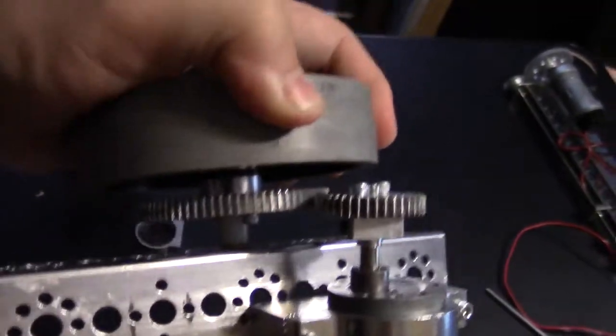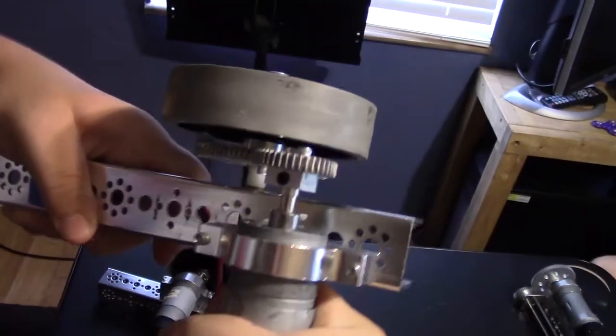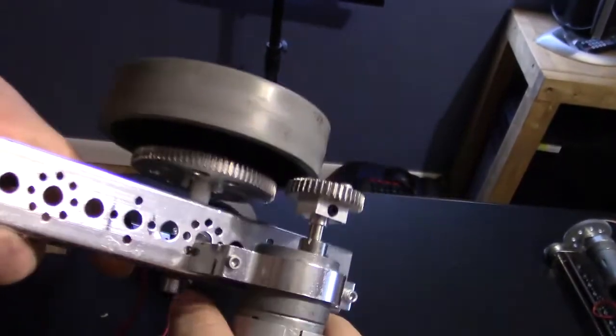One thing you need to be careful about is if the wheel or motor are loose or can wobble, then the gears might disconnect. Also, if the motor spins in the motor mount, then the gears can become disconnected as well.